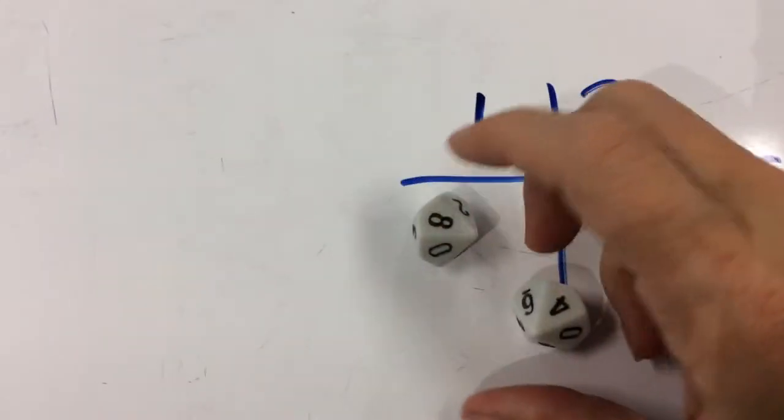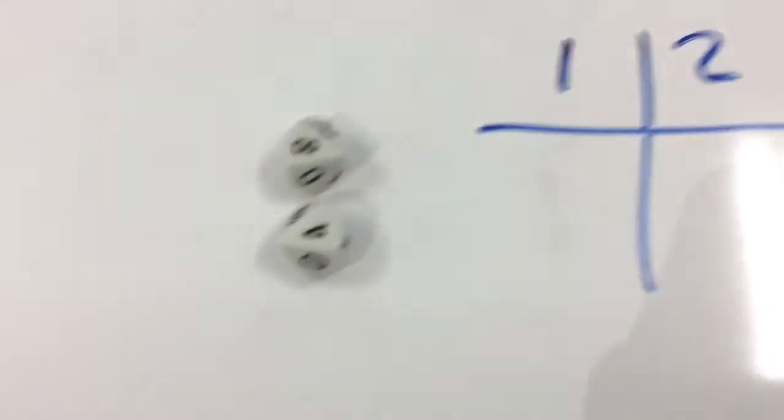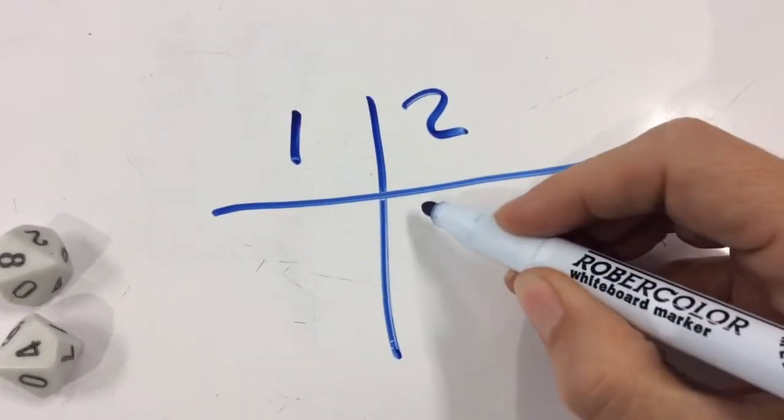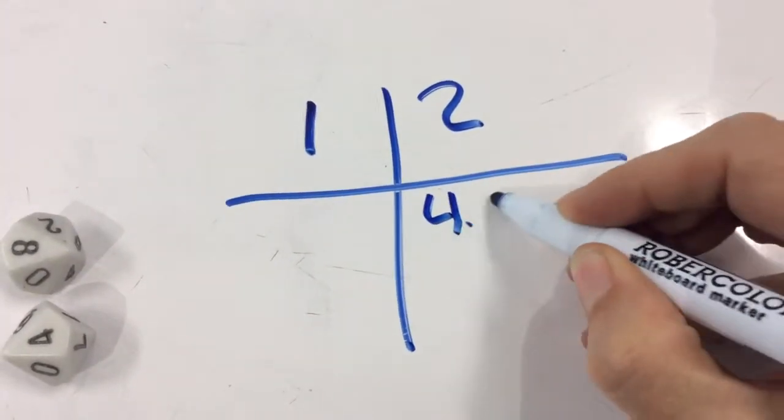So I have an eight and a four, and I could choose to put those in either order, 4.8 or 8.4. And then I write that down, so I'll do 4.8.